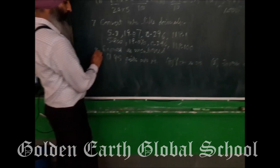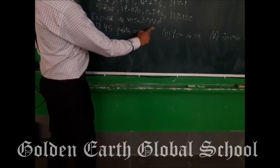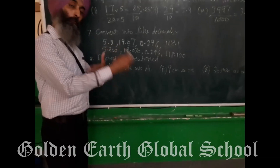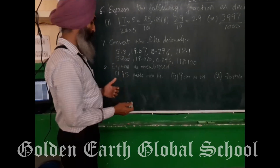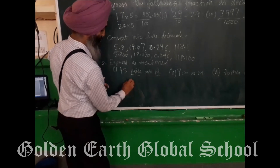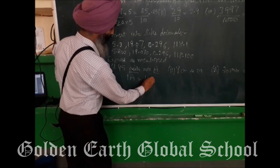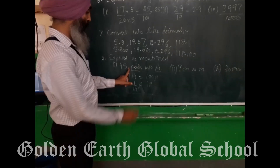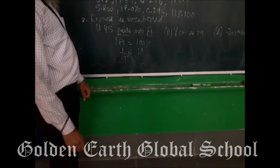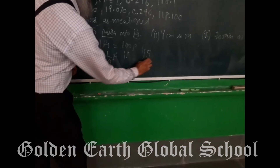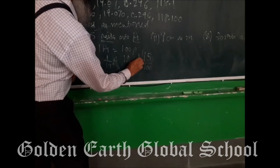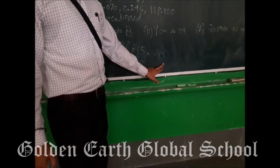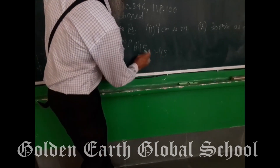Now the next question is 8: we have to express as mentioned. We have to convert 45 paisa into rupees. We will divide by 100 — since 100 paisa equals 1 rupee — which gives 0.45. So 45 paisa equals 0.45 rupees.